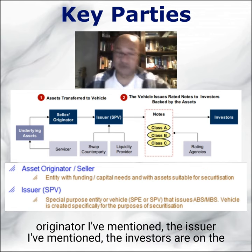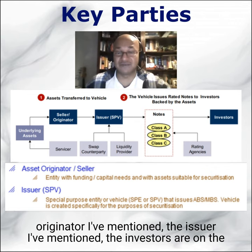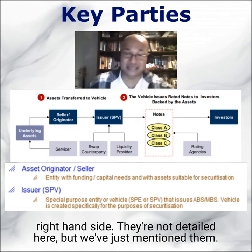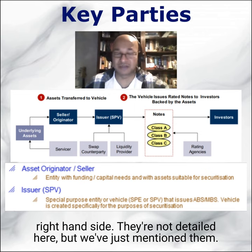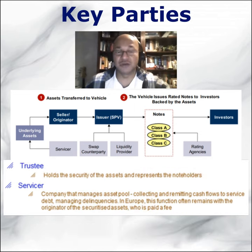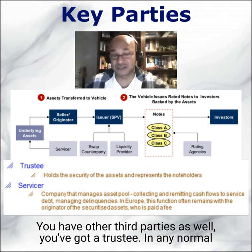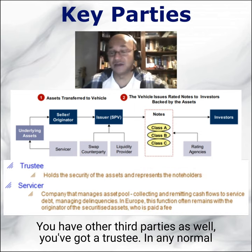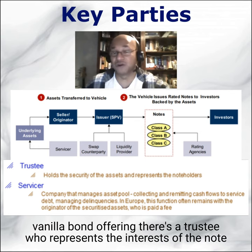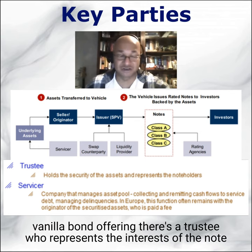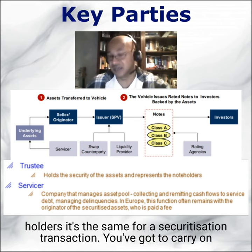You have some other third parties. The originator I've mentioned, the issuer I've mentioned, the investors are on the right-hand side. They're not detailed here, but we've just mentioned them. You have other third parties as well. You've got a trustee. In any normal vanilla bond offering, there's a trustee who represents the interests of the note holders. It's the same for a securitization transaction.